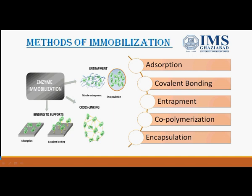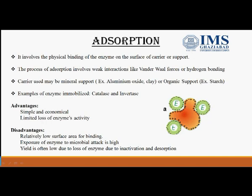Cross-linking is another method. Overall, we can divide the methods of immobilization into five parts: adsorption, covalent bonding, entrapment, co-polymerization, and encapsulation. Let us now discuss each method individually.